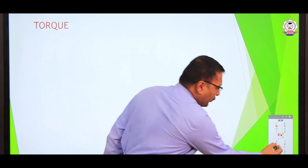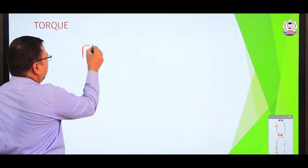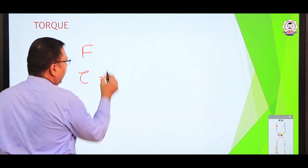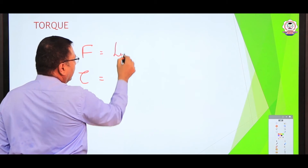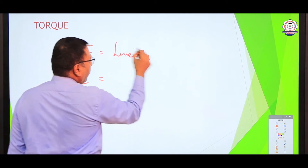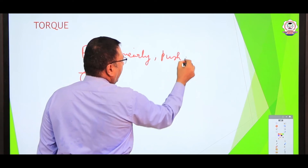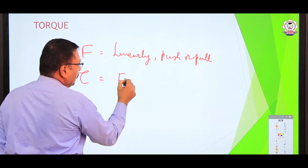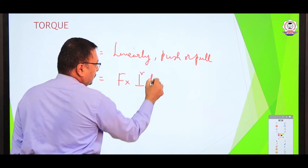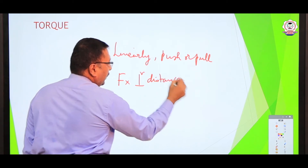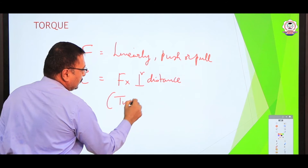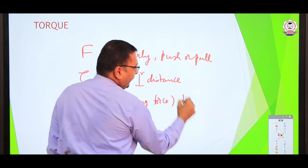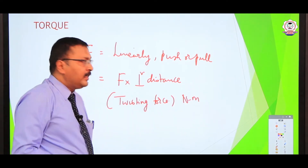Torque is defined as a twisting force. What is the difference between force and torque? Force is linear — it is a push or pull applied in a straight line — whereas torque is a twisting force. The unit of torque is Newton meter, the same as work done, but it acts in the perpendicular direction.